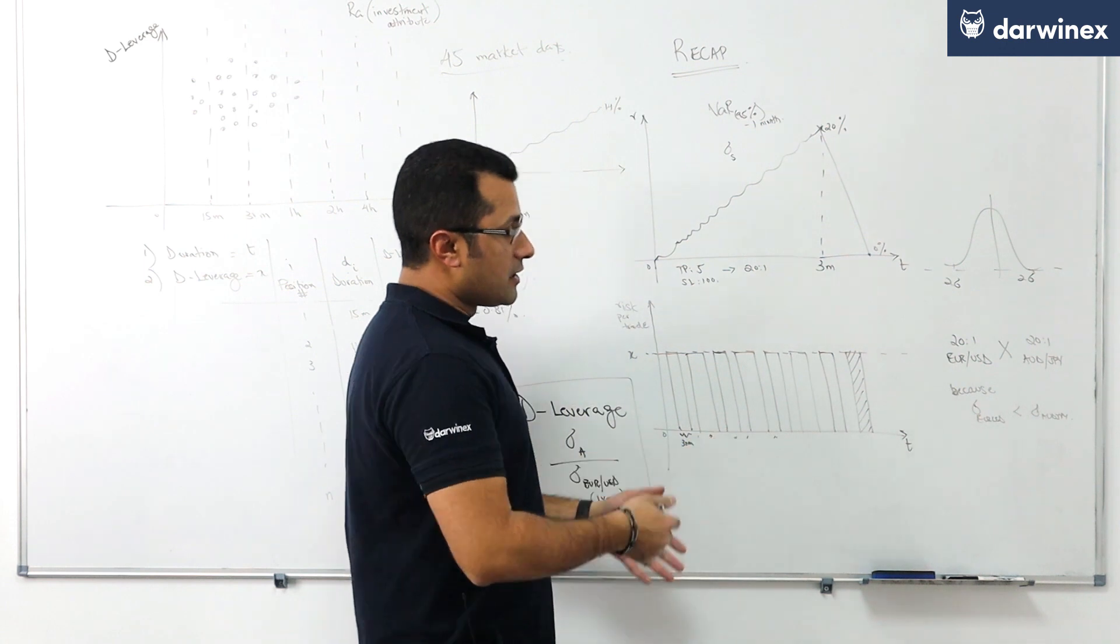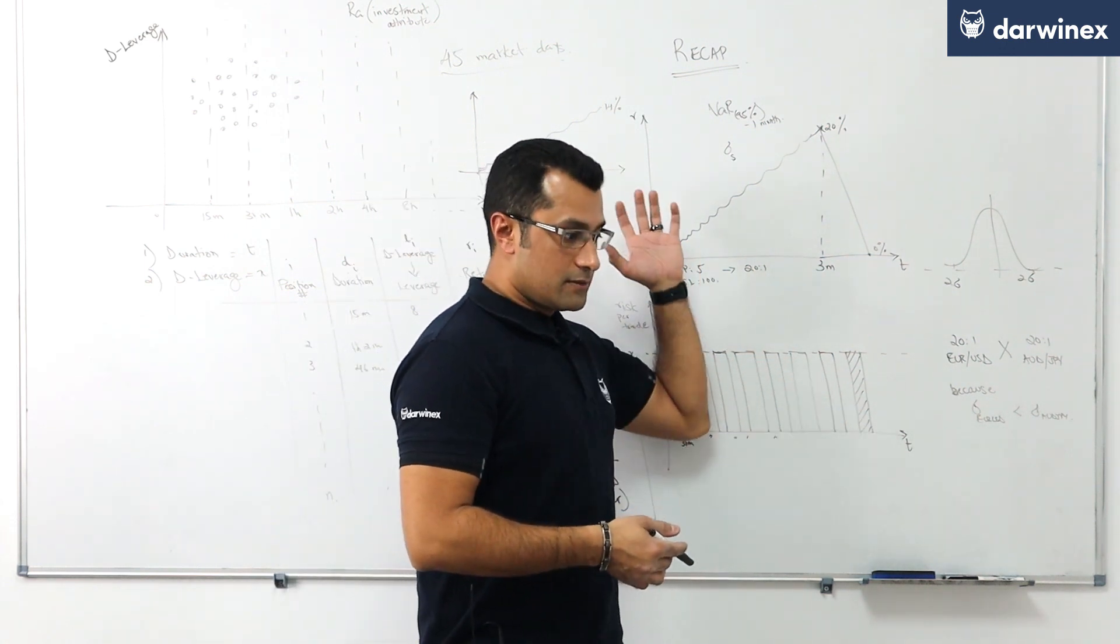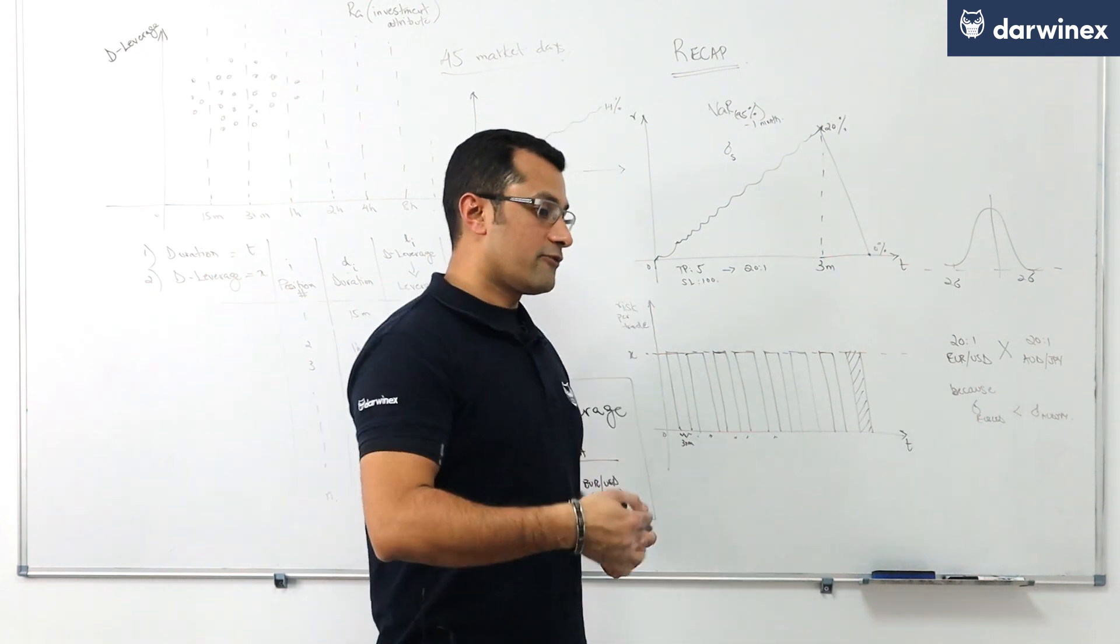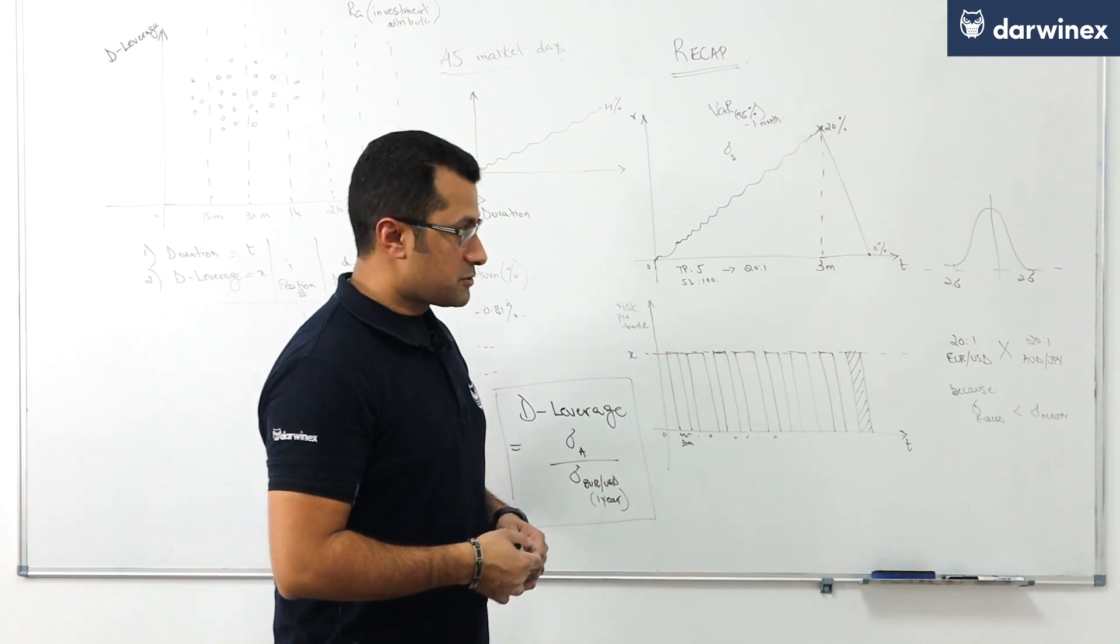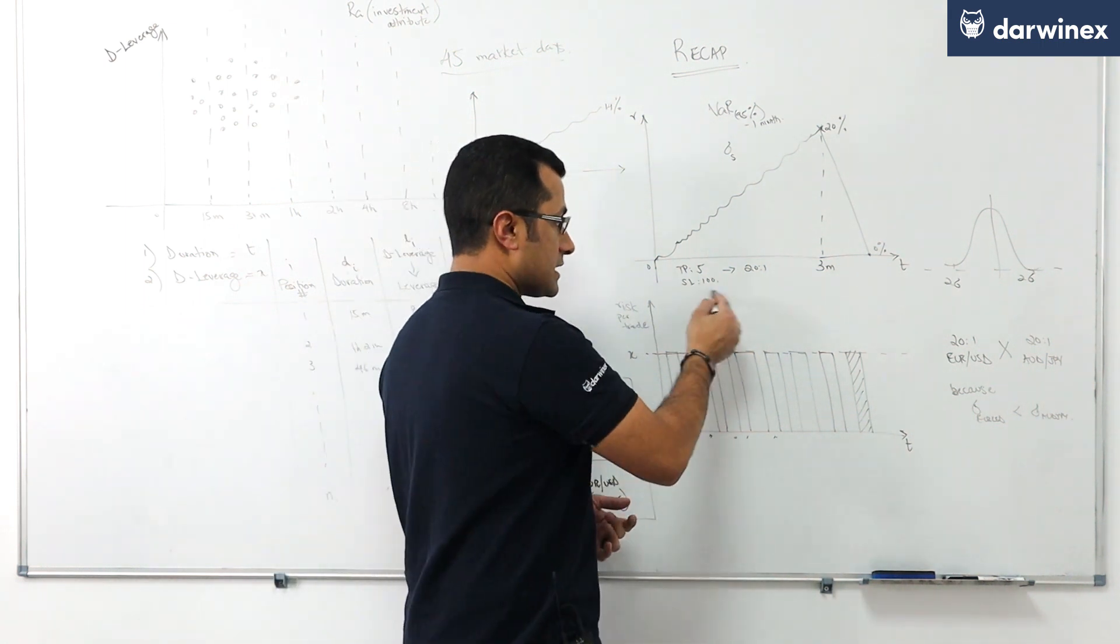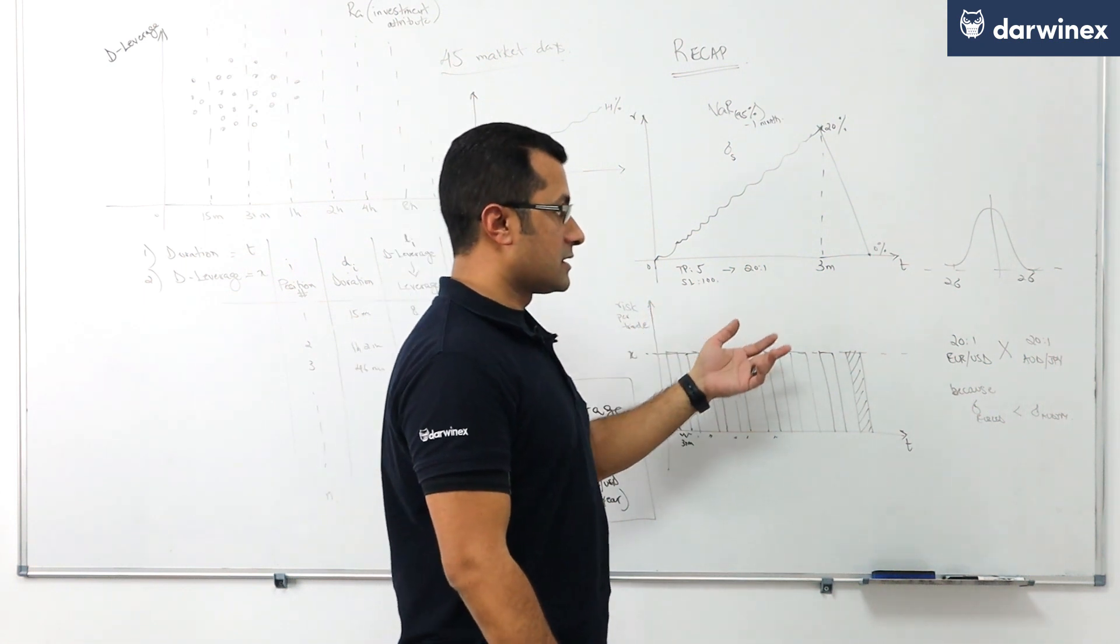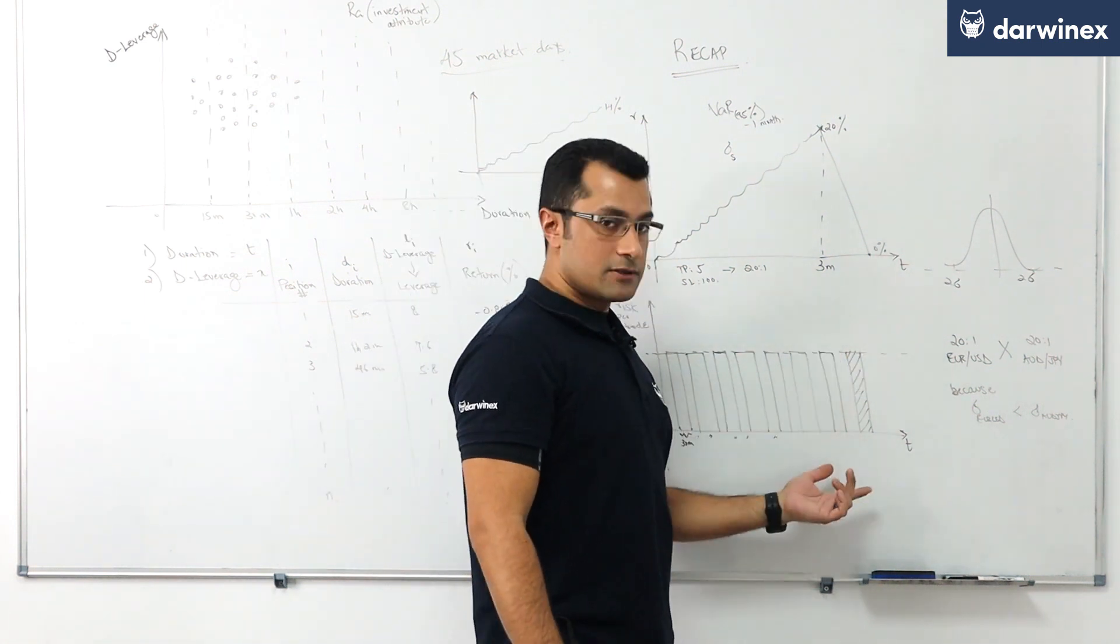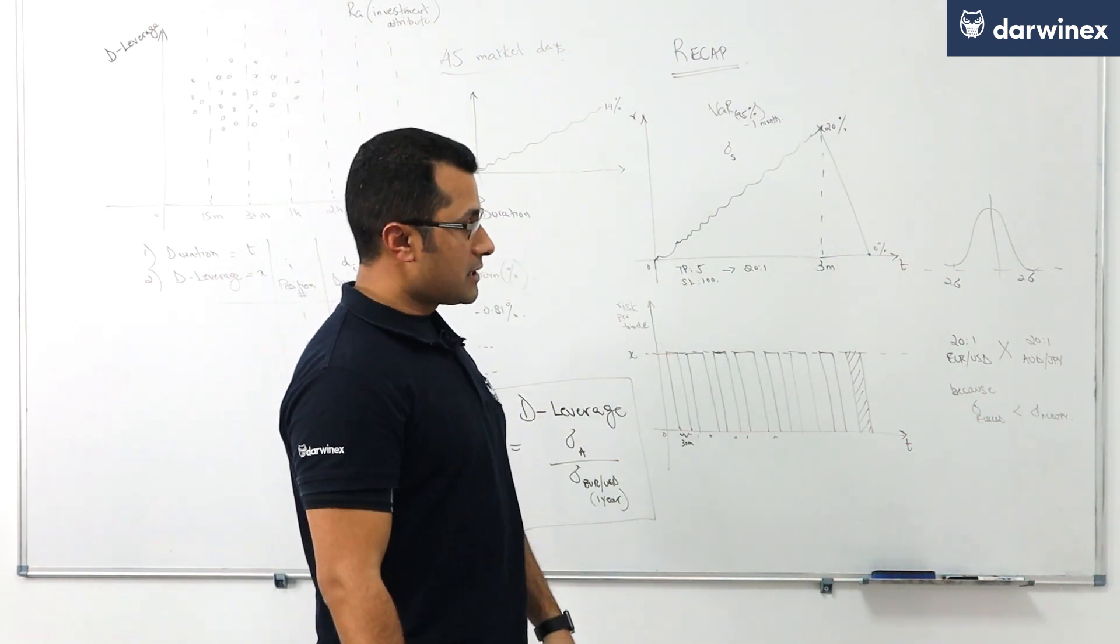Now what happened in that one trade was that for whatever reason the market during that one trade reverted very aggressively against the trader with a lot of volatility, a lot more than the trader was expecting given the trading strategy specifics, and it resulted in the stop loss being hit. When the stop loss of 100 pips was hit, it resulted in a 20% drawdown in one single trade that effectively wiped out the entire track record amassed up until that point in time.